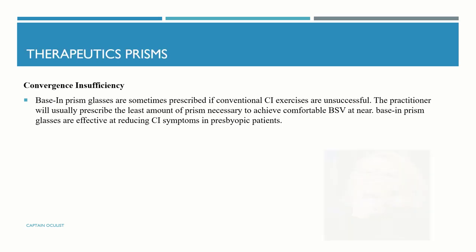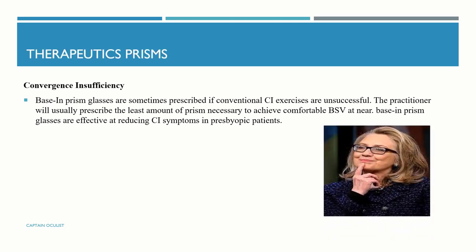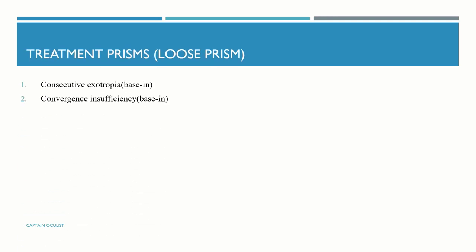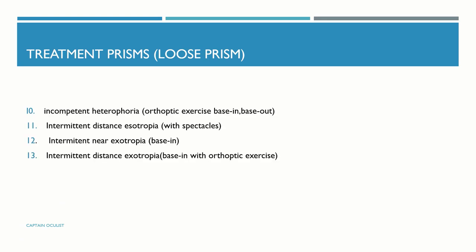Prisms are also used in convergence insufficiency — base-in prisms are prescribed, and the practitioner will usually prescribe the least amount of prism necessary to achieve comfortable binocular single vision at near. Base-in prism glasses are effective at reducing convergence insufficiency symptoms in presbyopic patients. Prisms can also be used in treatment of consecutive exotropia, convergence insufficiency, ptosis, 3rd nerve palsy, 4th nerve palsy, 6th nerve palsy, Duane syndrome, nystagmus, diplopia, and incompetent heterophoria.